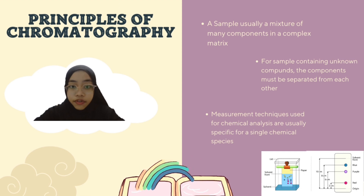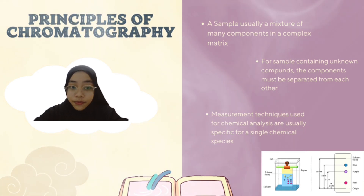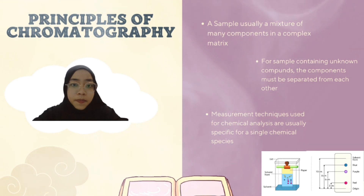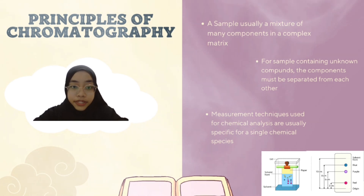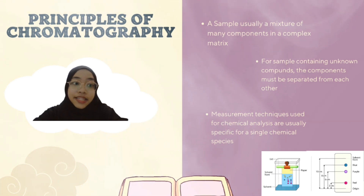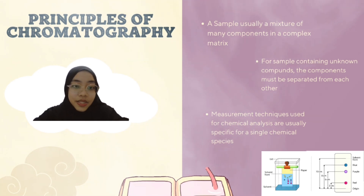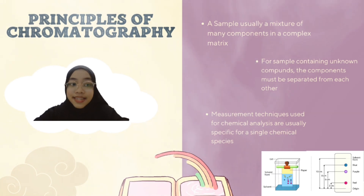A sample, usually a mixture of many components in a complex matrix — for example, containing many compounds — the components must be separated from each other so that each individual component can be identified by other analytical methods. Lastly, measurement techniques used for chemical analysis are usually specific for a single chemical species.